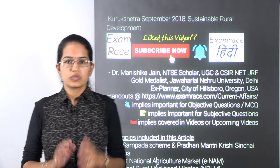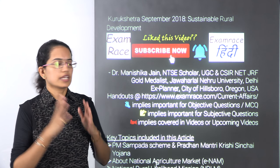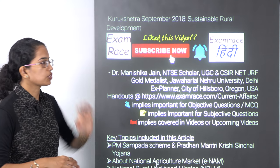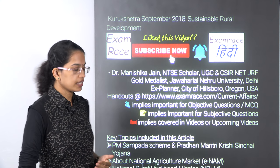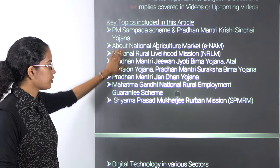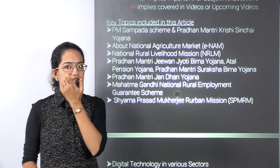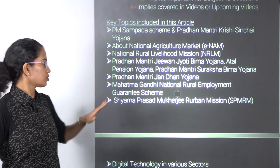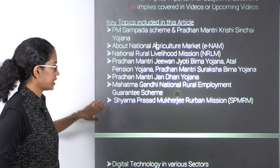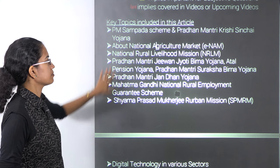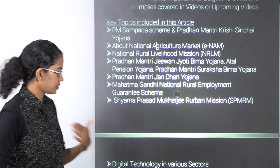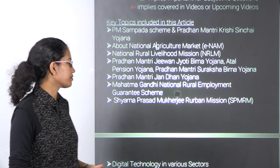Welcome. Let's start with Kurukshetra, the edition for September which talks about sustainable rural development. Across this volume there are a few important topics that have been touched upon. Shyama Prasad Mukherjee Rurban Mission is one of the very important ones among those, and the remaining ones we would be discussing as we move forward.